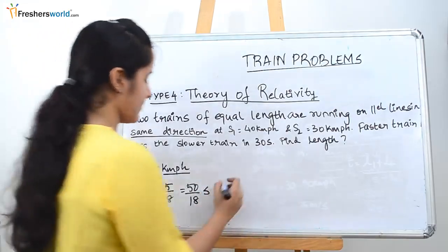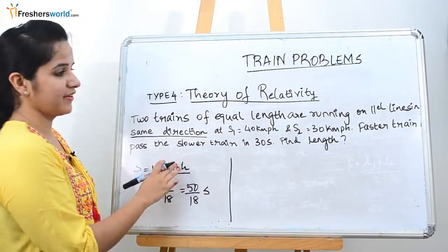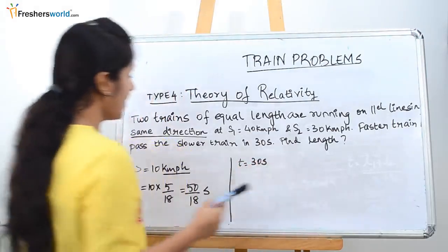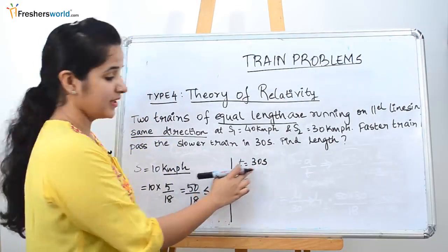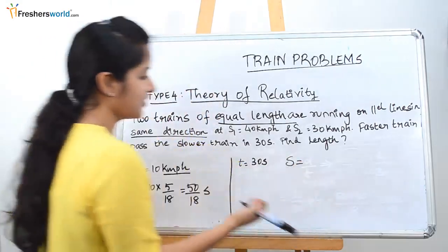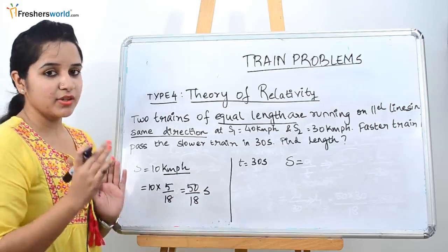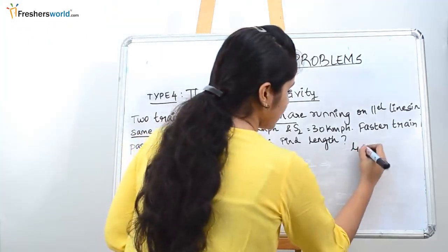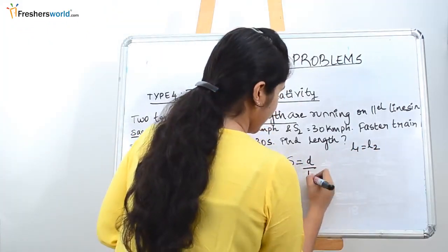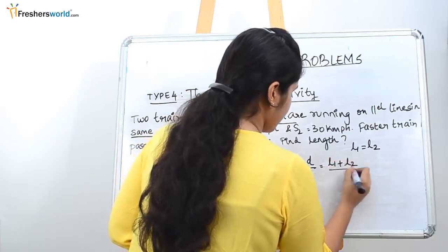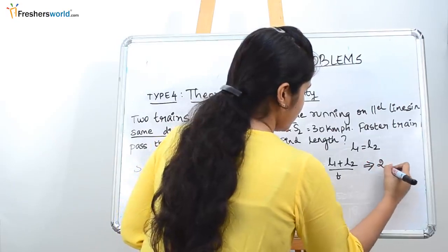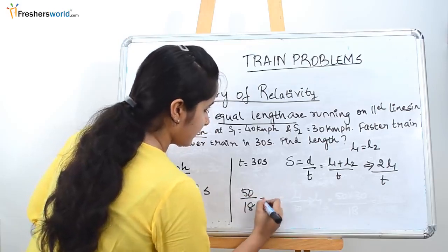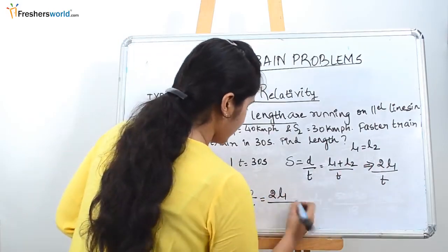The faster train passes the slower train in 30 seconds, so the time taken to cover is 30 seconds. The important catch here is the equal length of the trains. For two trains crossing each other, the distance is L1 plus L2, and since L1 equals L2, this becomes 2L1. Using speed equals distance by time: 50 by 18 equals 2L1 divided by 30. Solve for L1 to find the length.